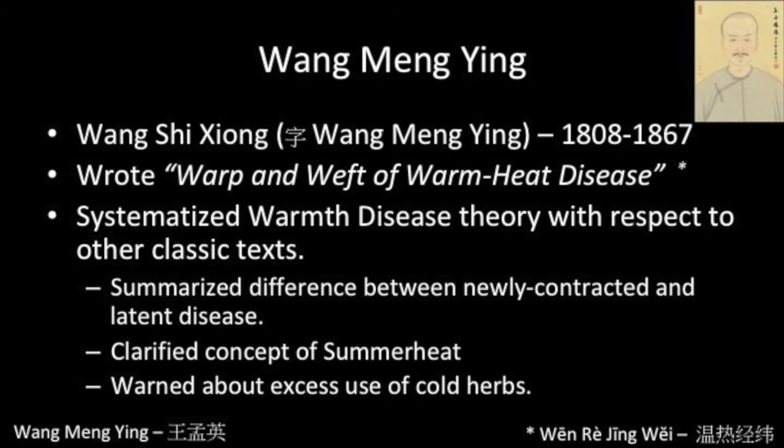Wang Mangying wrote the Warp and Weft, or the Latitudes and Longitudes of Warm Heat Disease, where he systematized warmth disease theory with respect to classic texts. He summarized the differences between newly contracted and latent heat disease, clarified the concept of summer heat, and warned against the excess use of cold herbs.